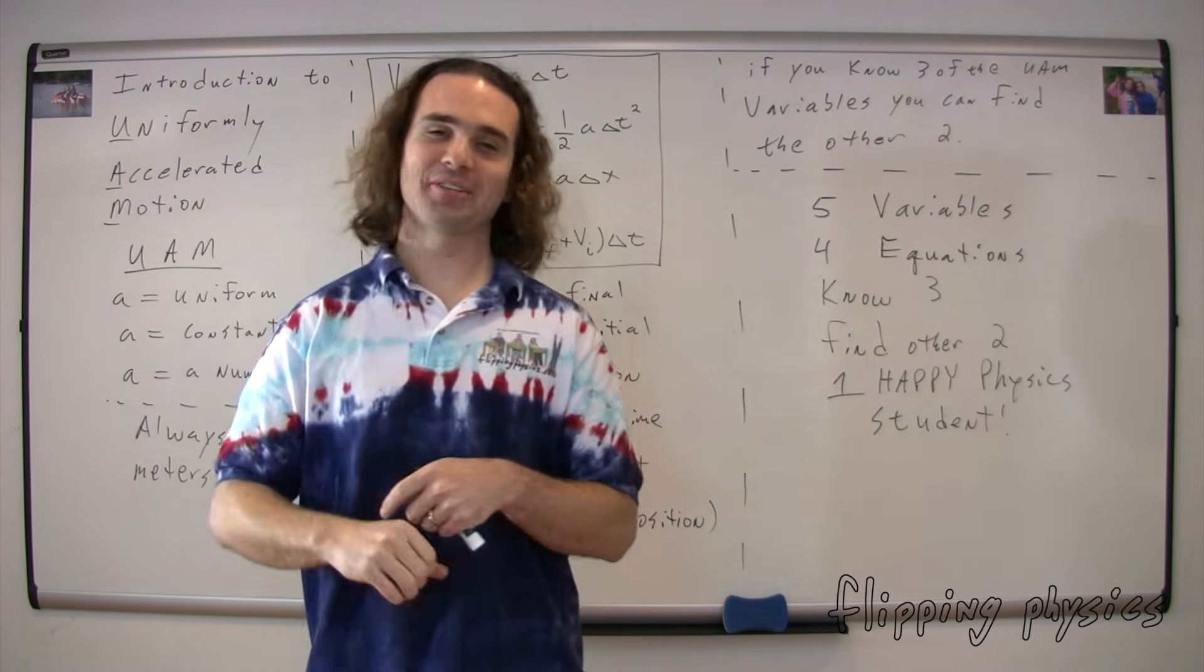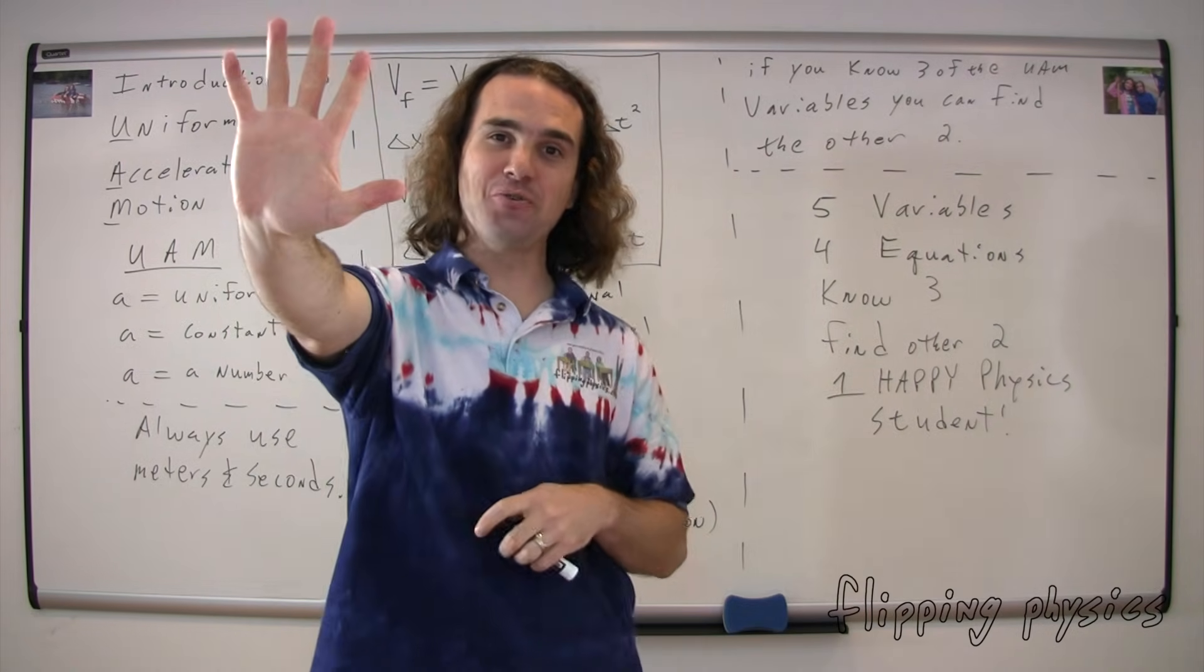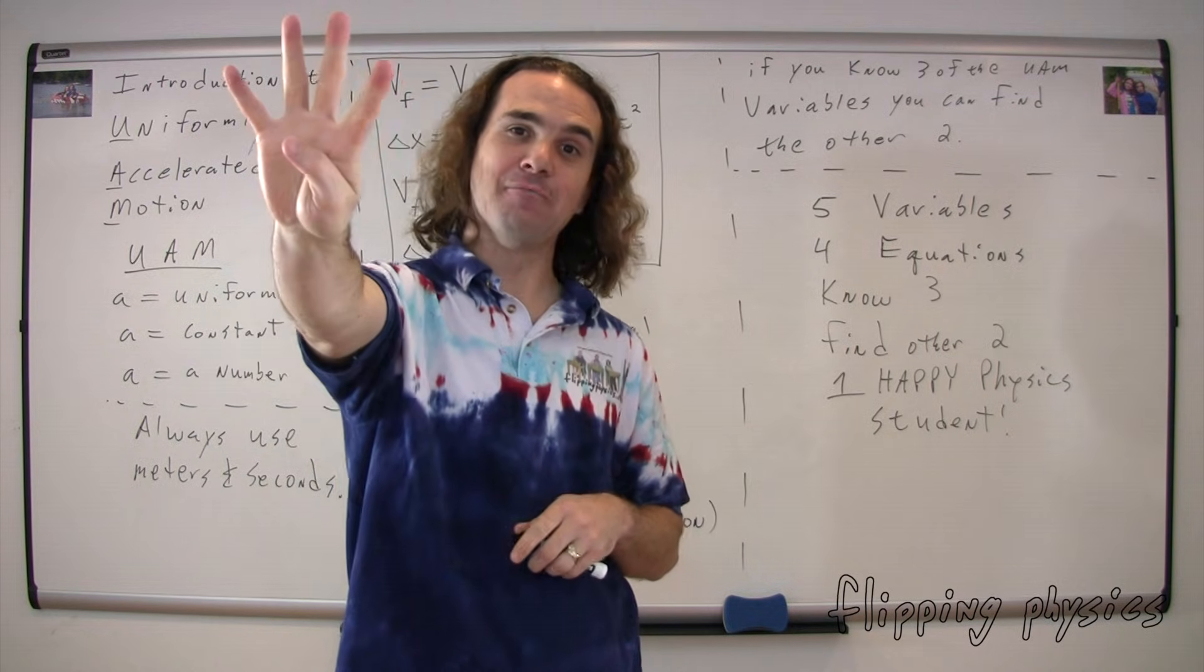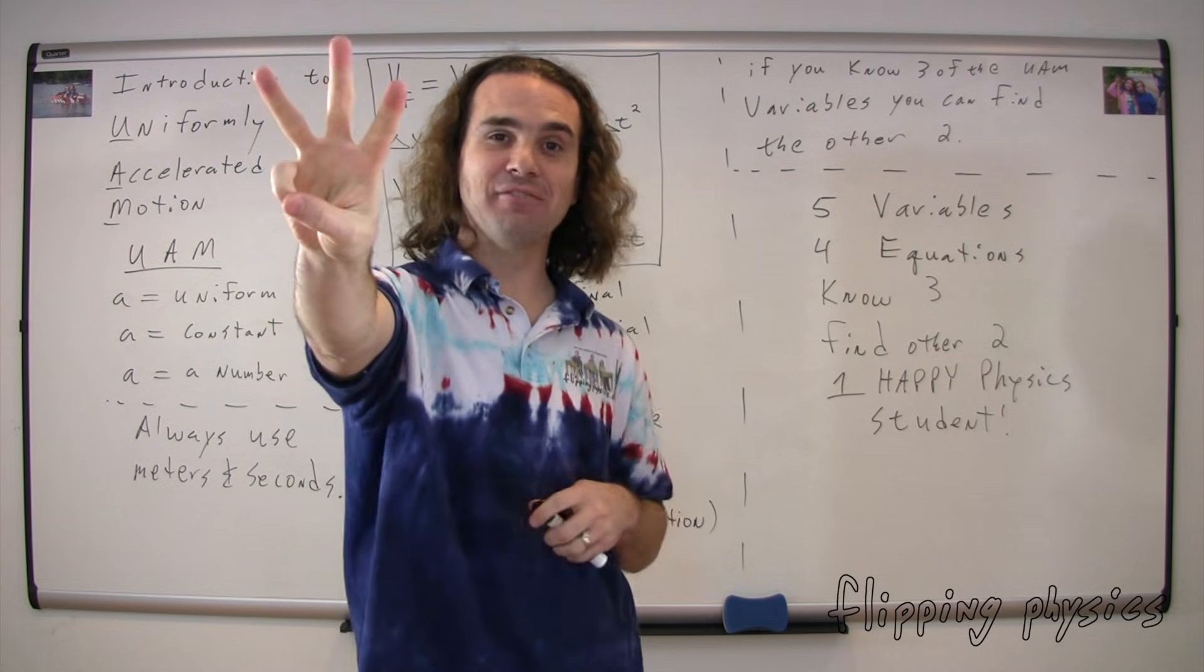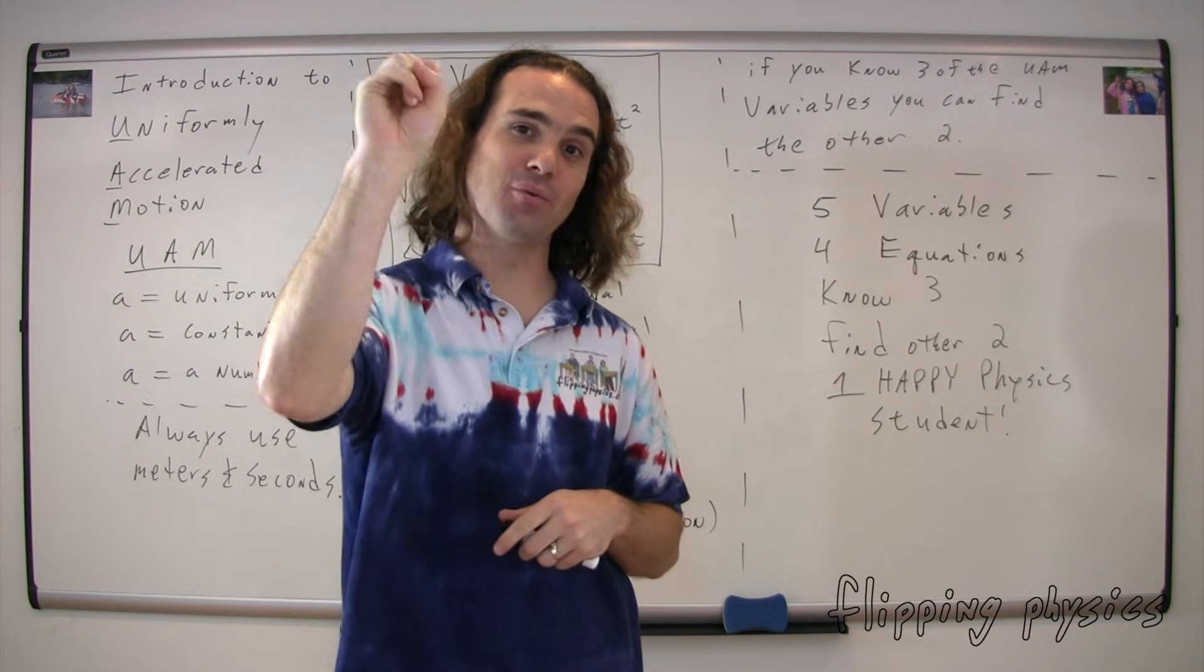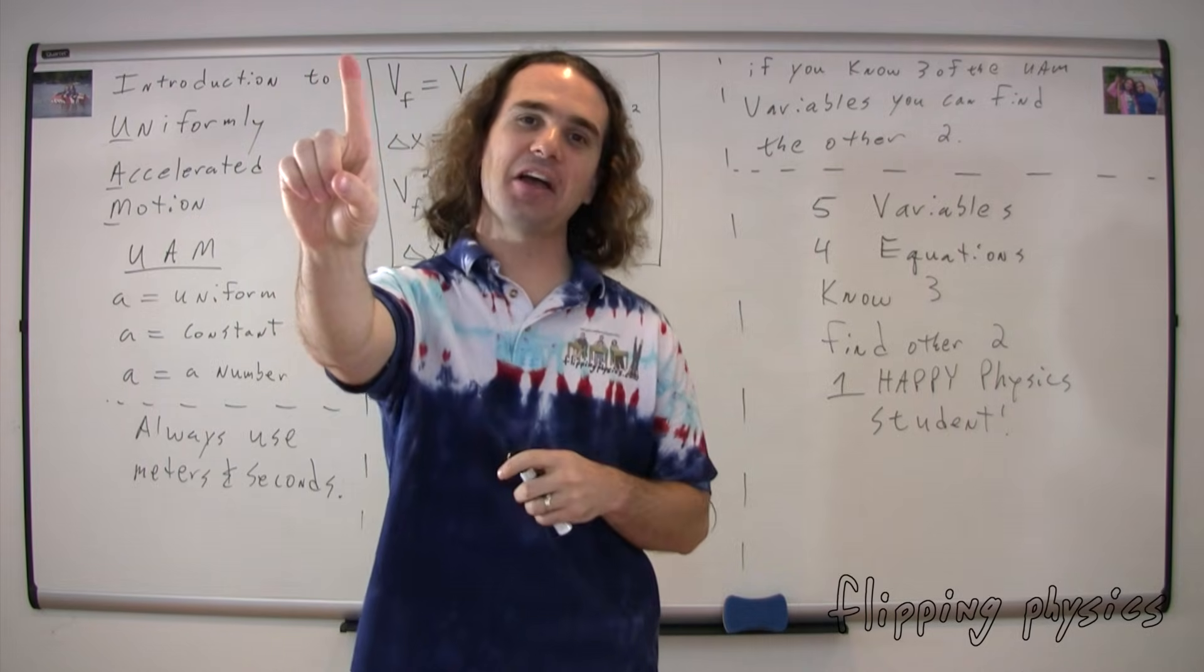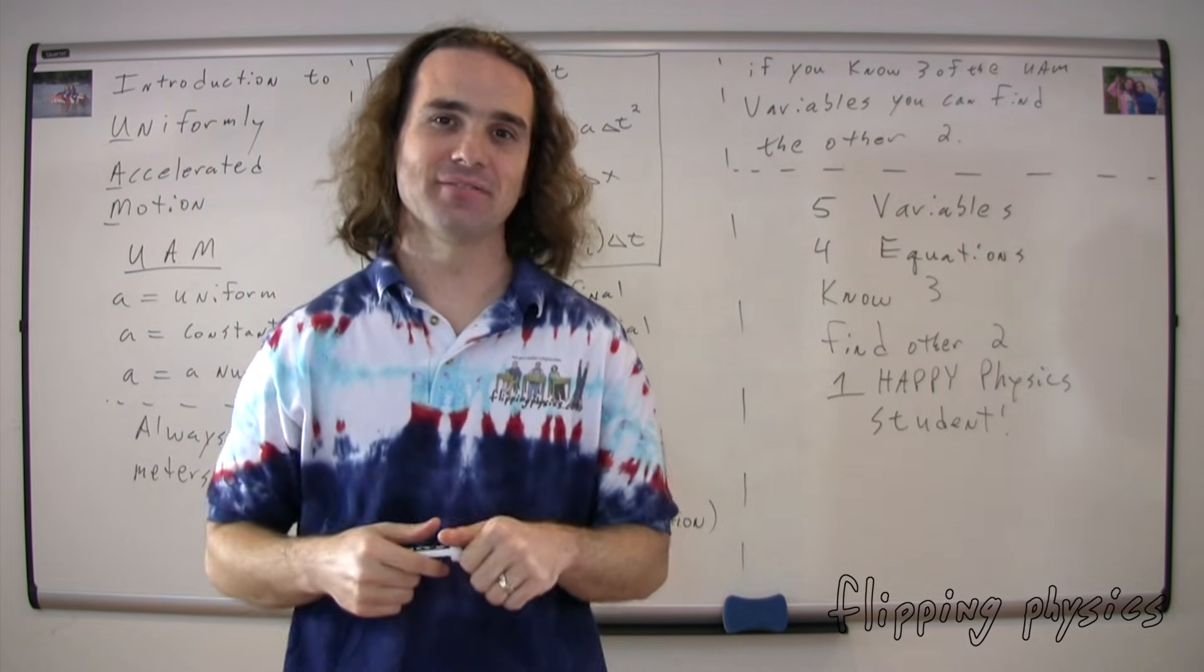All right, one more time. There are how many UAM variables? Five. And there are how many UAM equations? Four. And if you know how many of the UAM variables? Three. You can figure out the other... Two. Which leaves you with one... Happy physics student. Yeah. That's right. One happy physics student.